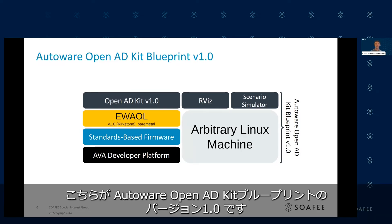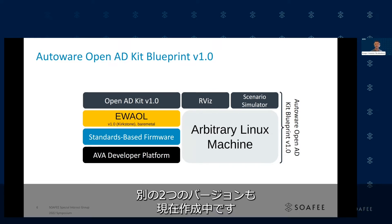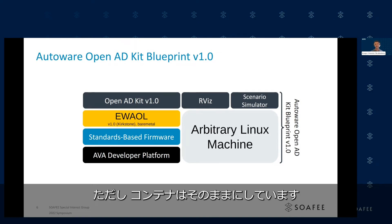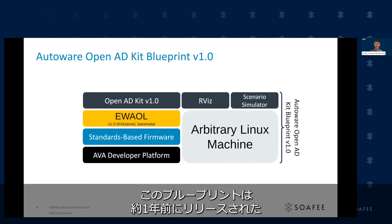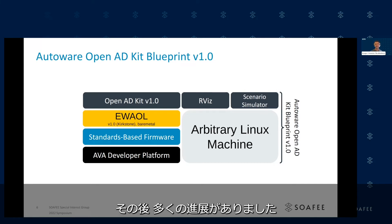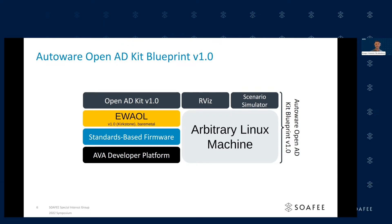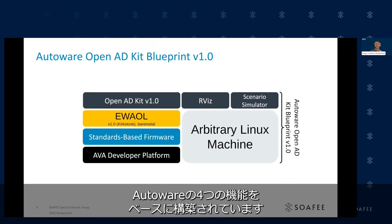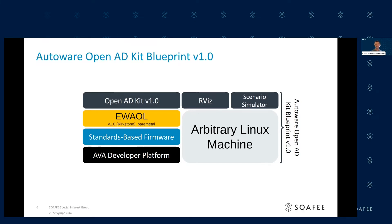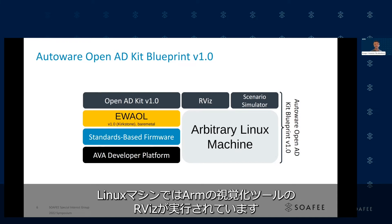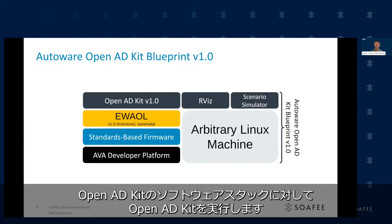This is version 1.0 of the Autoware OpenADKIT blueprint. There are two additional versions being worked on as well — version 1.1 and version 1.2 — where changes to the deployment have been made, though we've kept the containers as-is. The blueprint is based on OpenADKIT version 1.0 from the Autoware Foundation, which was released about a year ago. OpenADKIT version 1.0 is built on four features from Autoware: map, perception, planning, and vehicle interface. It is running on eWall on an AVA developer platform. The AVA developer platform and the Linux machine are connected over Ethernet, and the Linux machine is running Arbis, which is our visualization tool, and Scenario Simulator, which is our simulation tool, which exercises the OpenADKIT software stack.